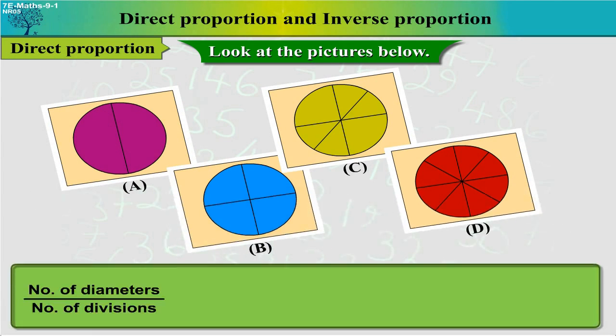So, number of diameters upon number of divisions is equal to 1 upon 2, that equals to 2 upon 4, that equals to 3 upon 6, that equals to 4 upon 8. Here, the ratio of the number of diameters to the number of divisions remains constant.